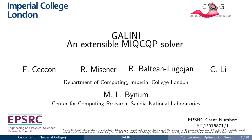Hi everyone, my name is Francesco Ceccon and I'm a member of the Computational Optimization Group at Imperial College London. Today I'm presenting Galini, the extensible solver for mixed integer quadratically constrained optimization problems that I developed together with my collaborators.